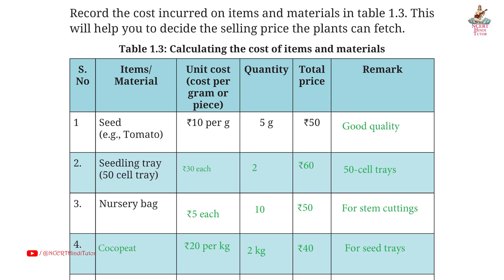Page 22, Table 1.3 — calculating the cost of items and materials. First: seed (tomato). Unit cost: Rs. 10 per gram. Quantity: 5 grams. Total price: Rs. 50. Remark: good quality.